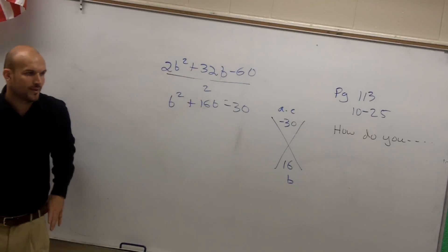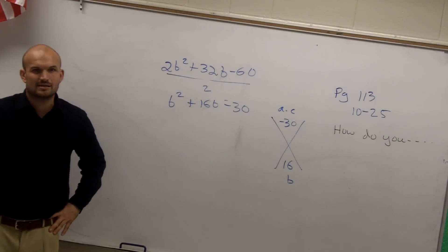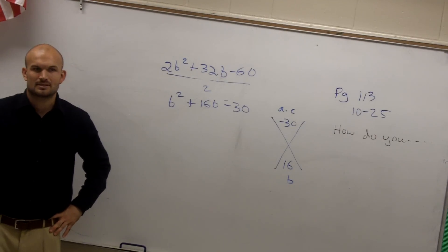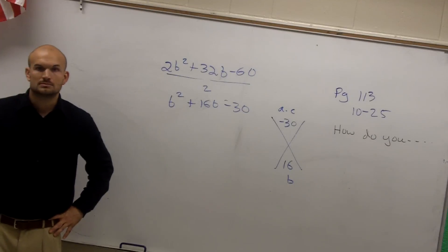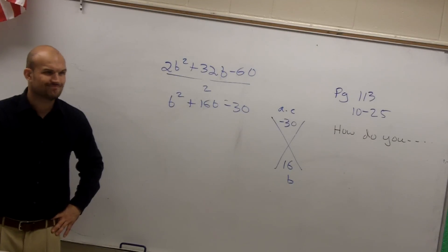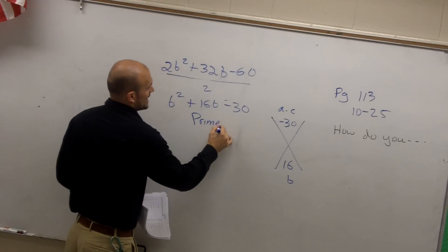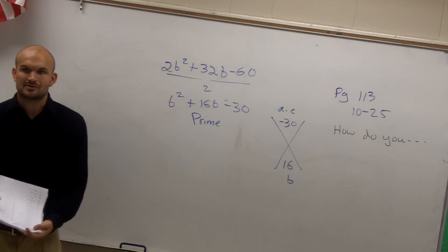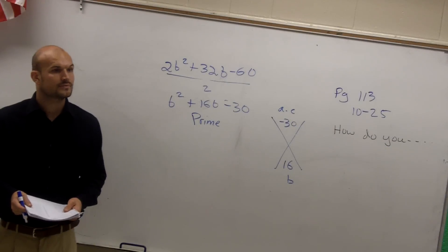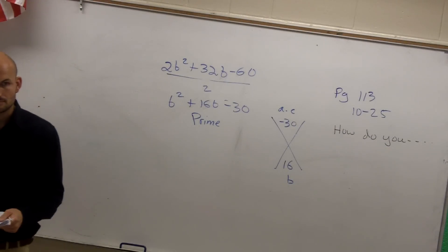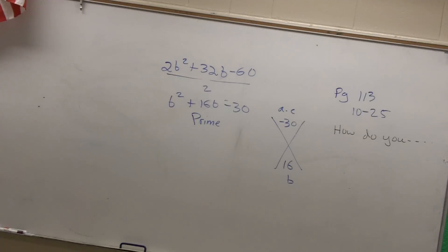So I look at this, and what two numbers multiply to give me negative 30 but add to give me a positive 16? Anything? No. So therefore, this is a prime quadratic—we cannot factor this, it is not factored, all right? Yeah, we'll talk about that. Okay, Dara, you got that?